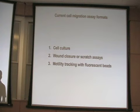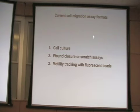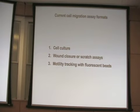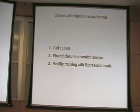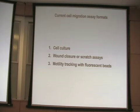To study cell migration today there are three common ways. The first and classical one is the subculture, where you grow your cells and monitor cell migration over a certain time period. Then you have wound closure or scratch assays, where you use a pipette tip to produce a gap in a confluent dish and follow gap closure over time.